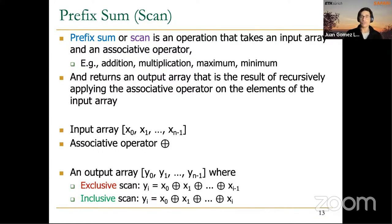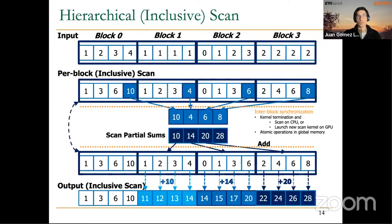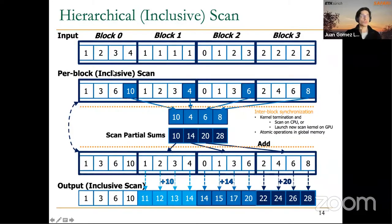In the prefix sum, we have an input array, an associative operator, and we obtain an output array where each element is computed based on the previous elements of the input array. We discussed different ways of implementing this prefix sum or scan, but all these approaches had a hierarchical approach — for example, the scan-scan-add operation: first performing per-block scan operations, then scanning an array of partial sums, and finally adding an offset to the output array values to obtain the final values.